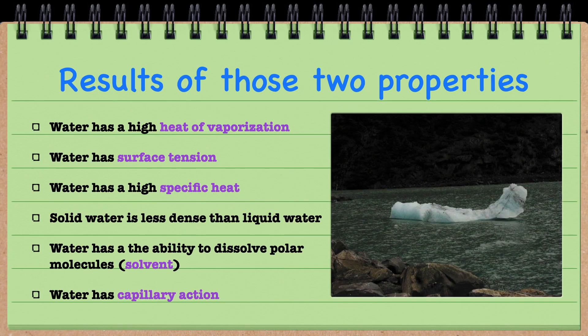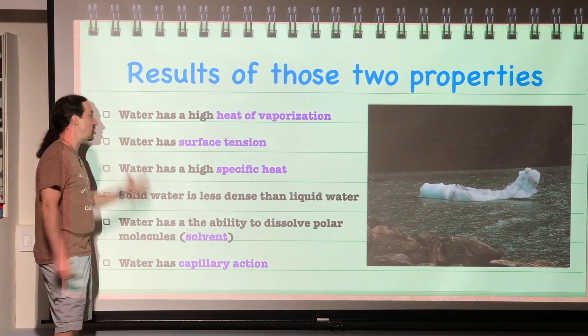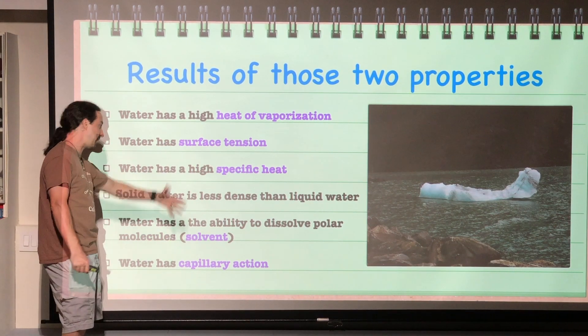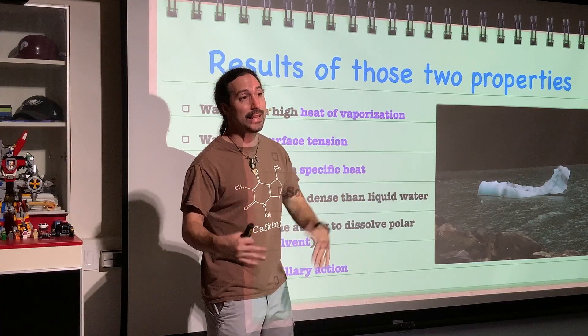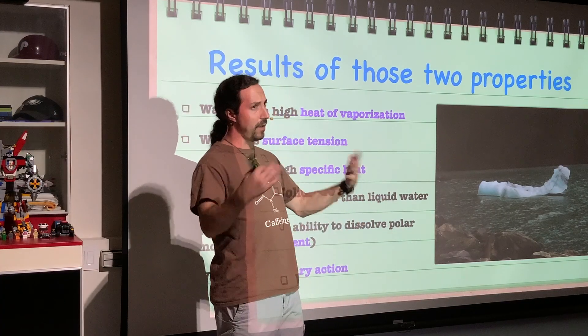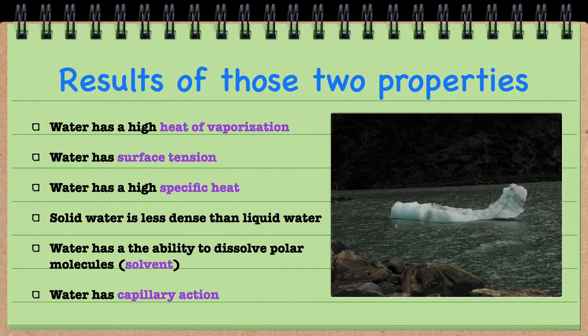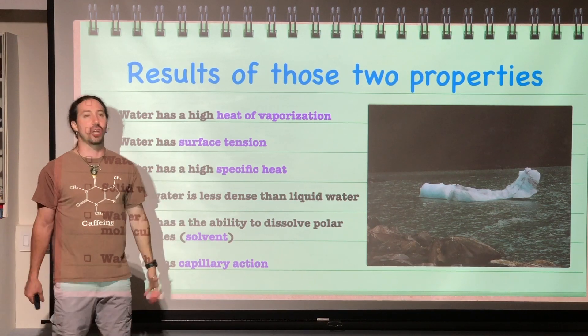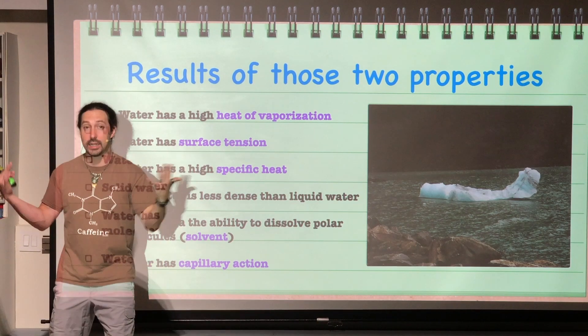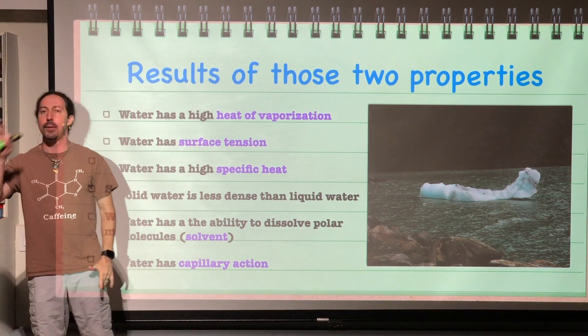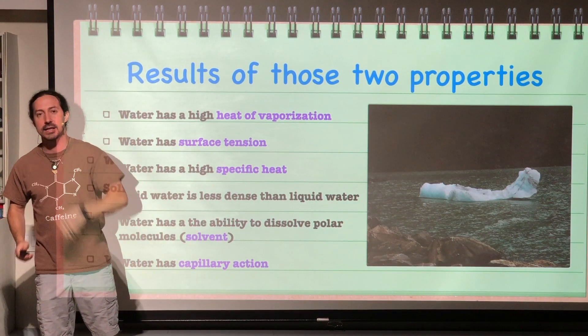And that provides us with a bunch of very important properties for life to exist upon this planet. Water has a high heat of vaporization, surface tension, high specific heat. It's less dense as a solid than as it is as liquid, which is very odd. Water has the ability to dissolve other polar molecules. And it also has this thing called capillary action. And you might be looking at these terms and thinking, what do any of these things mean? Well, don't worry about it. They will all be covered in the next episode.